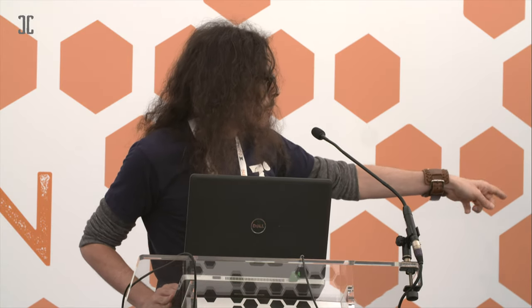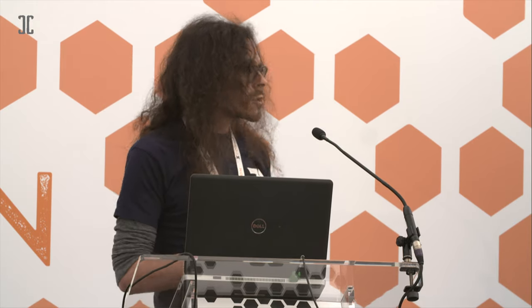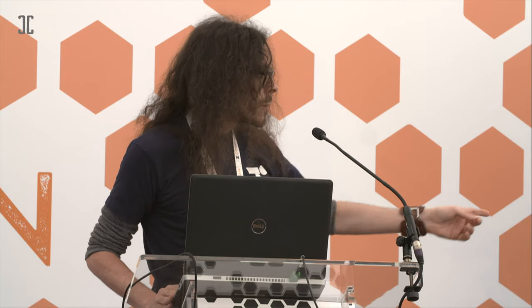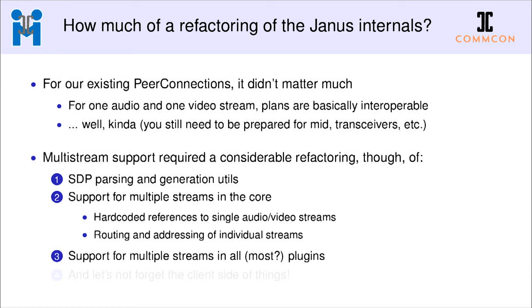We also had to support addressing multiple streams in the core — getting rid of some hard-coded references and being able to route these different streams internally, knowing for instance that an incoming stream comes from the third video M-line rather than the second. We needed to add multi-stream support for most of the plugins, because plugins work on the media and must be aware of this new addressing functionality. Finally, we had to take care of the client side.